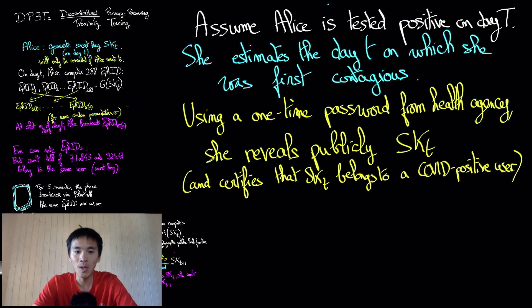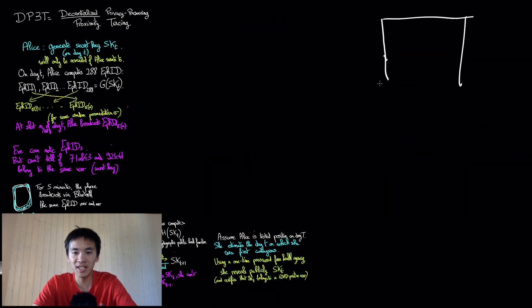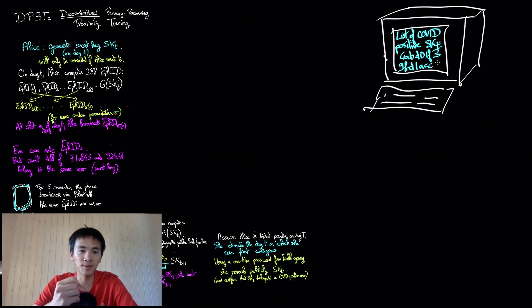In practice, to do so, Alice will publish her secret key SKT on the server. This means that the server will then host a list of secret keys SKT of users who became contagious on date T.